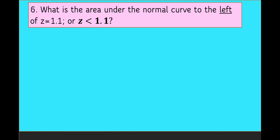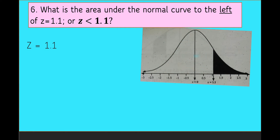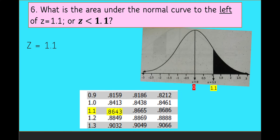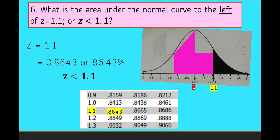Example 6: What is the area under the normal curve to the left of z equal to 1.1? We're going to find the area on the left of 1.1, or z less than 1.1. We have the graph of 1.1, and the value of 1.1 from the z-table is 0.8643. Therefore, the area of z equal to 1.1 is 0.8643, or 86.43%. The area on the left side of 1.1 is equivalent to 86.43%.